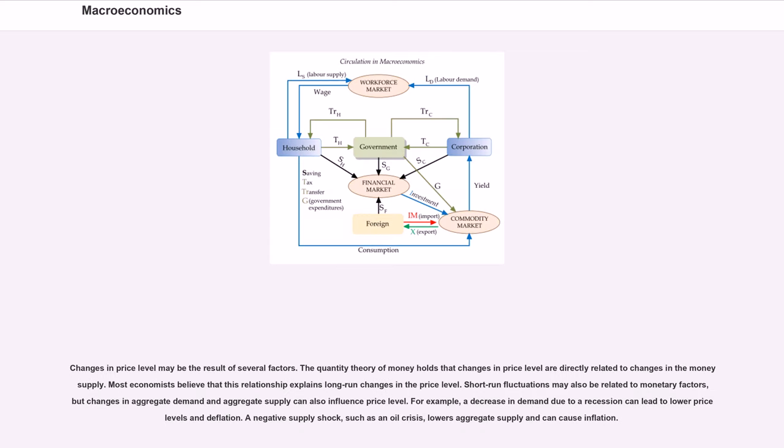Changes in price level may be the result of several factors. The quantity theory of money holds that changes in price level are directly related to changes in the money supply. Most economists believe that this relationship explains long-run changes in the price level. Short-run fluctuations may also be related to monetary factors, but changes in aggregate demand and aggregate supply can also influence price level. For example, a decrease in demand due to a recession can lead to lower price levels and deflation.